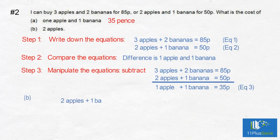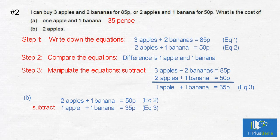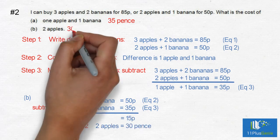(b) Two apples? We subtract the result from the second statement to get one apple equals 15p, so two apples equals 30p.